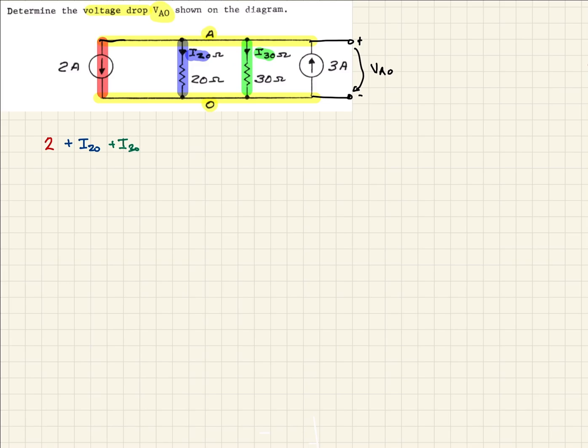And then finally, we have this branch here. That's just a current source going into A. Since it's entering A, we defined leaving as positive. So that's going to need to be a negative 3. If we sum all those currents up, according to Kirchhoff's Law, that should equal 0.